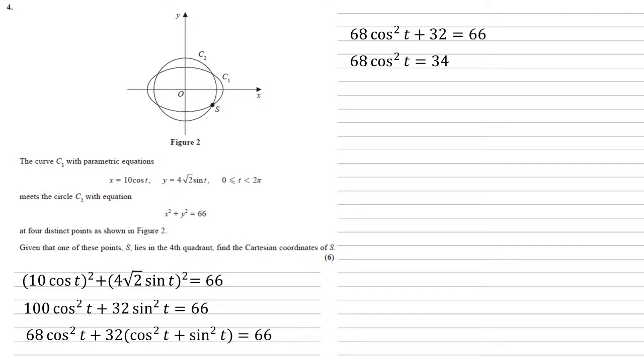Rearranging, we get 68 cos squared t equals 34. So cos squared t equals 1/2, and cos t equals plus or minus 1 over root 2.